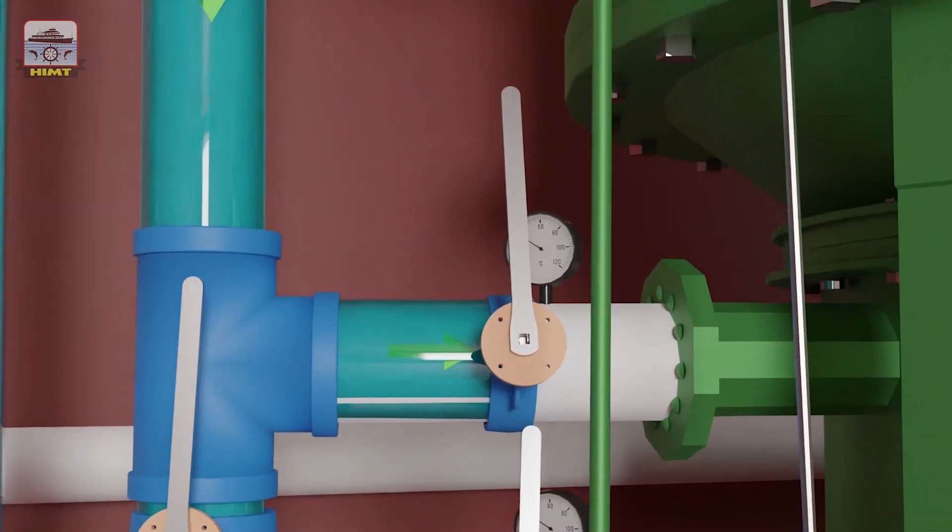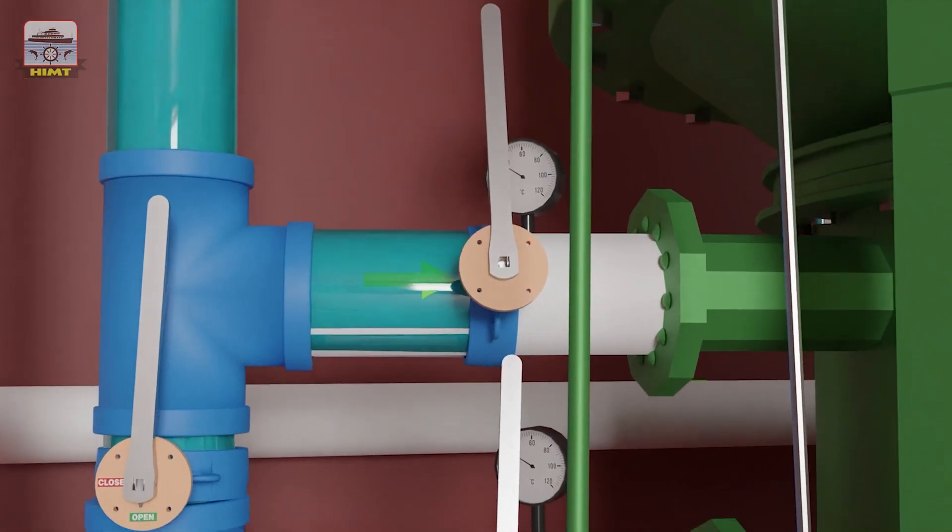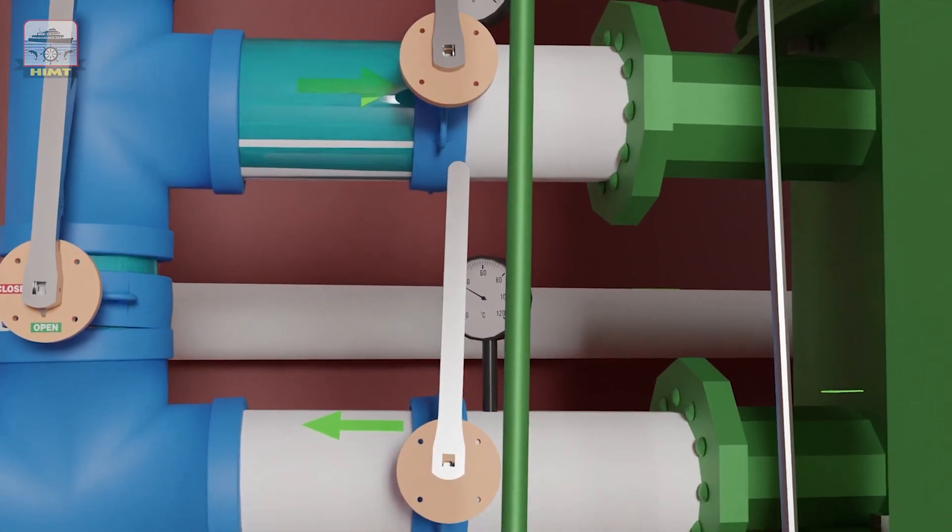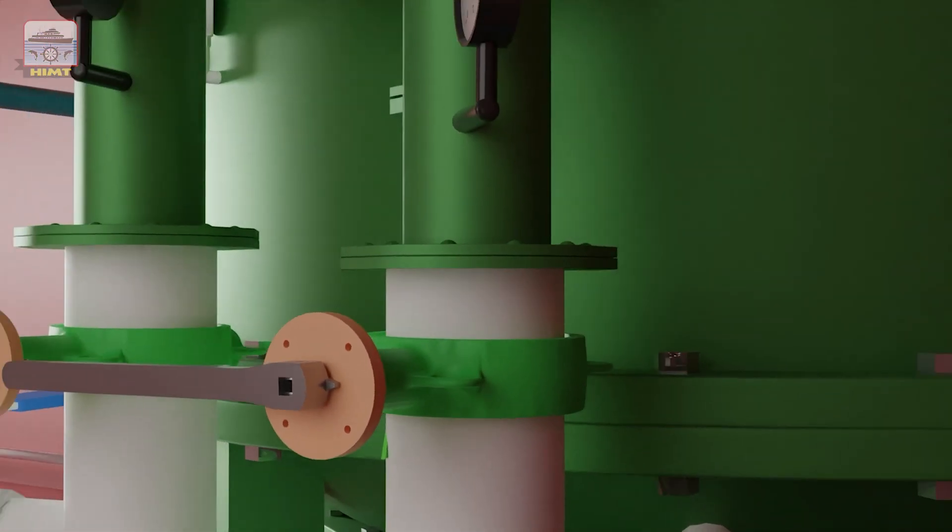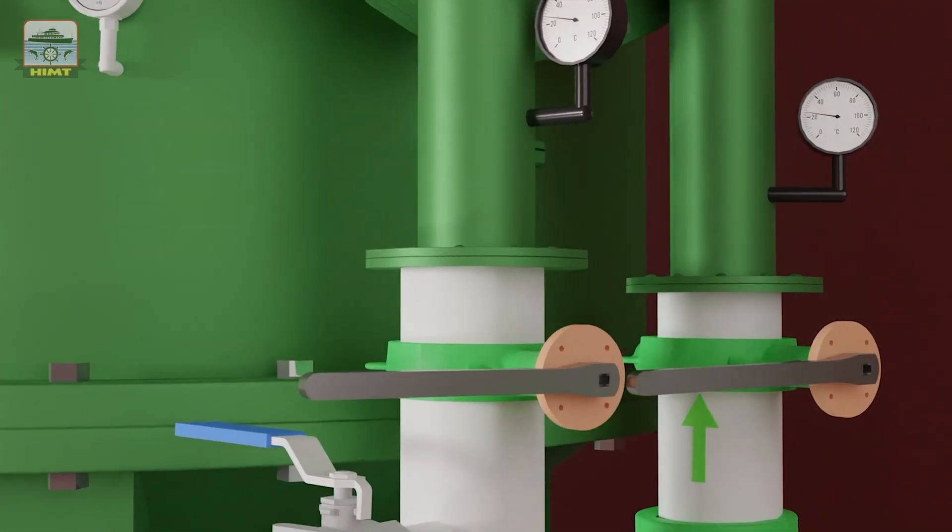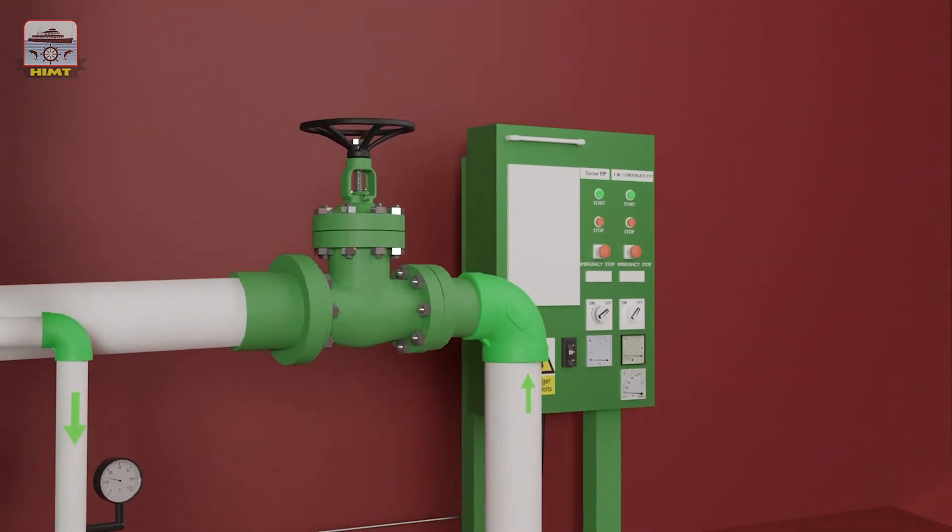This is the hot jacket water inlet to the evaporator, which is a crucial part of the distillation process. And this is the jacket water outlet where the cooled water exits the evaporator after the heat exchange process. This is the cooling water inlet, the entry point for the cooling water that circulates through the condenser. This is the cooling water outlet where the cooled water exits the condenser, having absorbed heat from the vapor and facilitated its condensation.